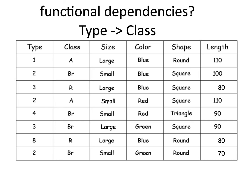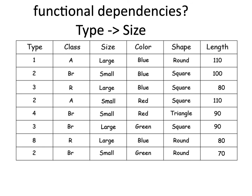It's good to look at tables and check for functional dependencies. In this case, we know it's not true because we have type '2' with class 'BR' and type '2' with class 'A', so it's not functionally dependent.